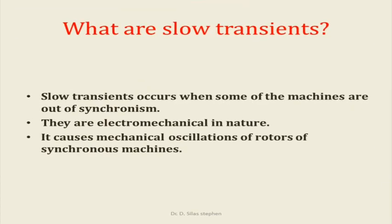What are slow transients? Slow transients occur when some of the machines are out of synchronism. They are electromechanical in nature and cause mechanical oscillation of the rotors of synchronous machines.